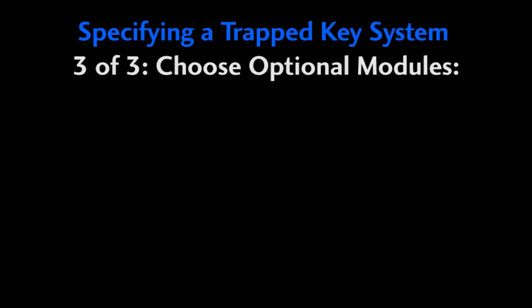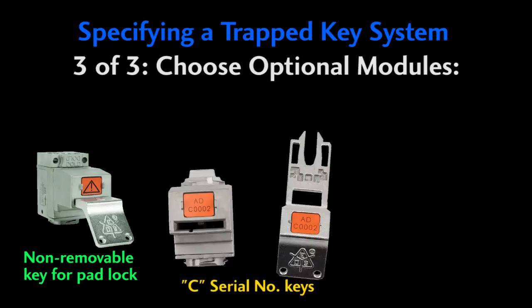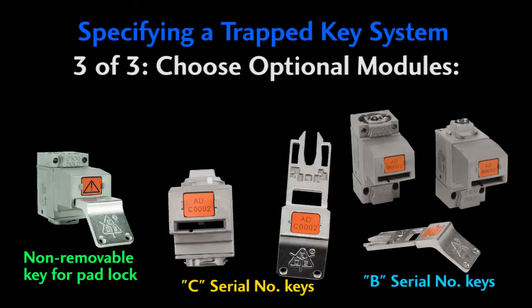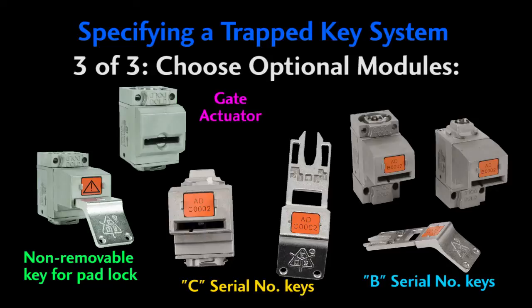Step three: select any optional modules you'll need – the padlock or safety key modules, a key module set, or even just an additional gate actuator.